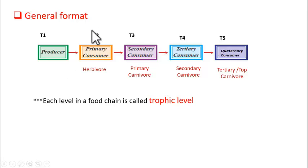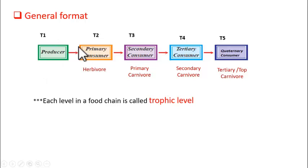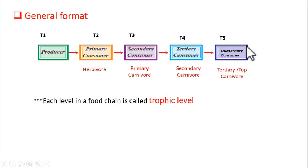This is one trophic level, then another, then the next, and the next. Always the first trophic level should be with producers, followed by primary consumers, secondary consumers, and so on. I hope you understood — this is about food chains.